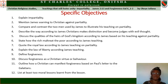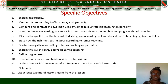Before the lesson proper, we have to look at the specific objectives. By the end of this lesson, the student should be able to: 1. Explain impartiality. 2. Mention James's warning to Christians against partiality. 3. Compare and contrast the two men used by James to illustrate his teaching on partiality. 4. Describe the way, according to James, Christians make distinctions and become judges with evil thoughts. 5. Discourse the qualities of the heirs of God's kingdom according to James, based on his teaching against partiality.